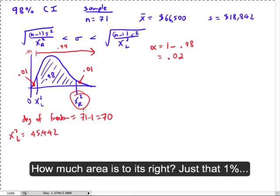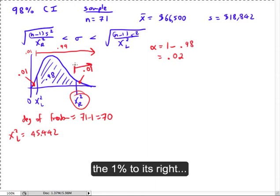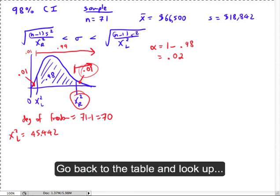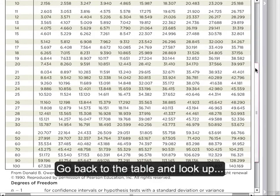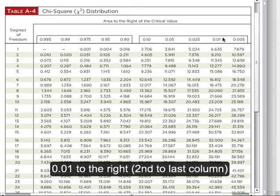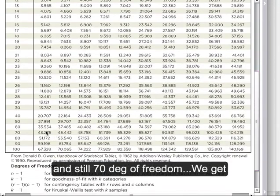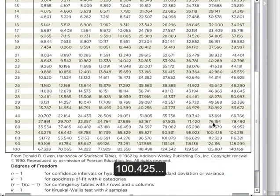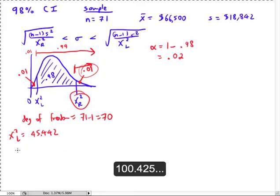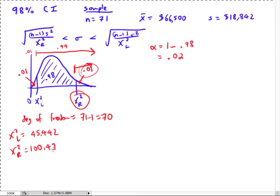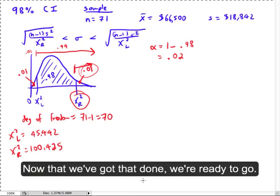Now let's go to chi-squared right. How much area is to its right? Well, it's just that 1% over here. The 1% is to its right. So we go back to the table and we're going to look up 0.01 to the right, the second to last column here. And then we're going to still go n equals 70. So it's 100.425.